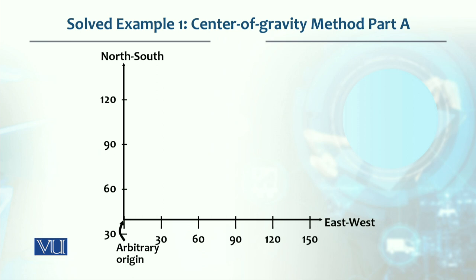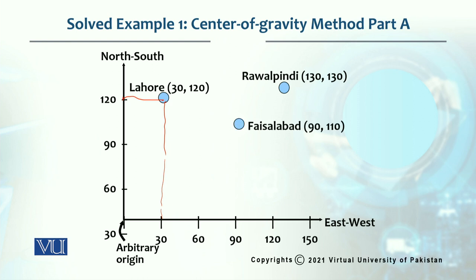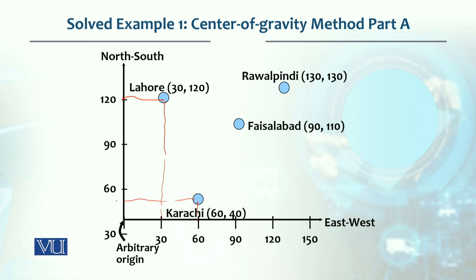This is basically an x-y coordinate system. The origin has markings at 30, 60, 90, 120 on the y-axis, and this is the x-axis. We have drawn Lahore's location: x is 30 and y is 120, so it is plotted at (30, 120). Rawalpindi is at 130 and 130. Faisalabad is at 90, 110. And Karachi is at 60 x and 40 y-coordinate. These are relative distances/locations on the coordinate grid.